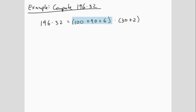Remember that we need to have each term in the first parentheses multiplied with each term in the second parentheses. So we'll start with the 100 in the first parentheses: 100 times 30 plus 100 times 2. Now we'll go to the second term in the first parentheses, plus 90 times 30 plus 90 times 2. And now we'll go to the last term in the first parentheses, plus 6 times 30 plus 6 times 2.